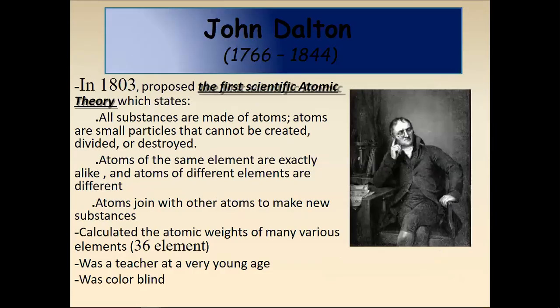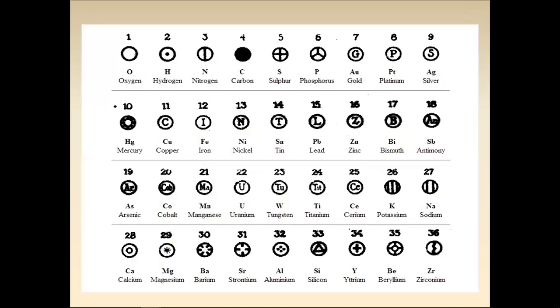Next, Dalton's atomic theory states that all substances are made of atoms — small particles that cannot be created, divided, or destroyed. Atoms of the same element are exactly alike, and atoms of different elements are different. Atoms join with other atoms to make new substances. Dalton calculated the atomic weight of 36 main elements, was a teacher at a very young age, and was colorblind.